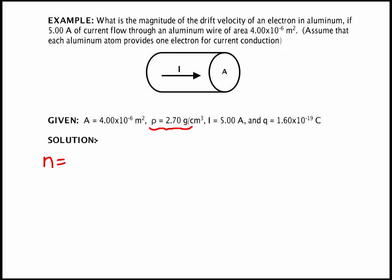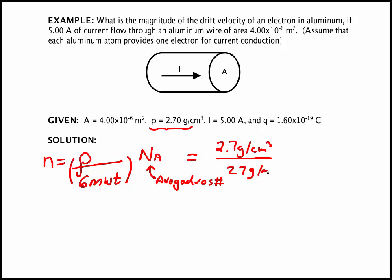So n is going to be found by taking the density, dividing by the gram molecular weight. That will give me the number of moles and then multiplying by Avogadro's number. So this is 2.7 grams per centimeter cubed. The gram molecular weight is 27 grams per mole for aluminum. And then we multiply that by 6.02 times 10 to the 23rd per mole. The moles cancel, the grams cancel, and we get 6.02 times 10 to the 22nd centimeters to the minus 3.